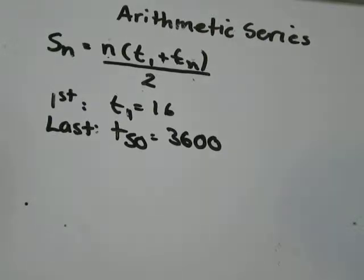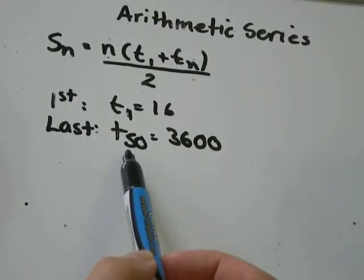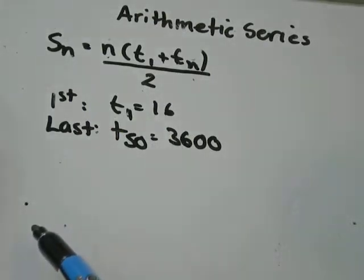So in this example, I've got the first term, T1, is equal to 16, and the last term, T50, is equal to 3600.